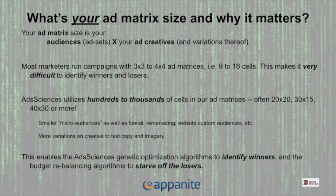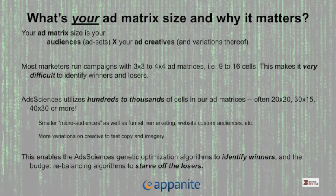Ad matrices — your ad matrix is the size of your audiences, the target audience who gets to see your ad, and the number of pieces of creative that you have. Most marketers run campaigns that are three by three, three by four, or four by four — so an ad matrix of about 16 cells. The problem is: when you look at a matrix of 16 cells, how do you identify which combination of ads and audiences are working? What we do is subdivide those audiences, giving you a matrix size of hundreds or thousands of cells — typically no less than 500. Now you can actually look at it and say, "This combination is really working, this one is not" — then turn off the ones that aren't working and apply the budget to the ones that are.